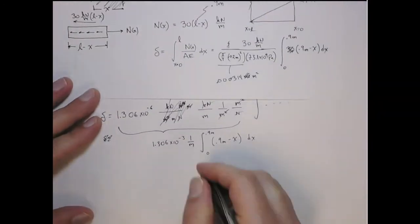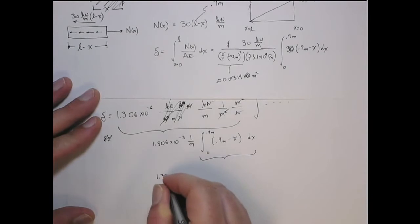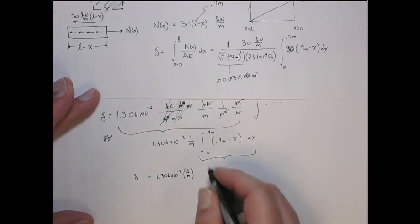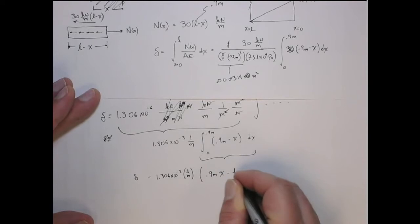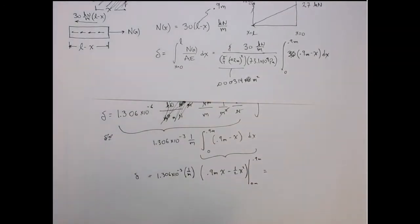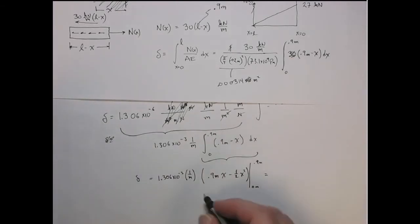When we do the antiderivative on this, I get 1.306 times 10 to the minus 3, this is 1 over meters. This is the total elongation. And then the antiderivative of this is 0.9 meters times x minus 1 half x squared. And we have to go from 0 meters to 0.9 meters. This becomes 0.9 squared basically minus 1 half of that, so this becomes 0.405 meters squared.